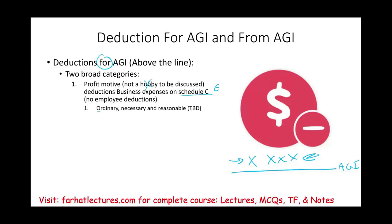Business deductions have to be ordinary, necessary, and reasonable. Those three terms are important, because for a business expense to be deductible, it has to meet all three criteria — I'm going to have a separate recording for this. In addition to business deductions, that's Category 1. Category 2 is adjustments. We're going to have a list of those adjustments, which I will show you on the form itself. We'll have a separate recording for each item on that list — for example, the student loan deduction, educator expense, and so on.